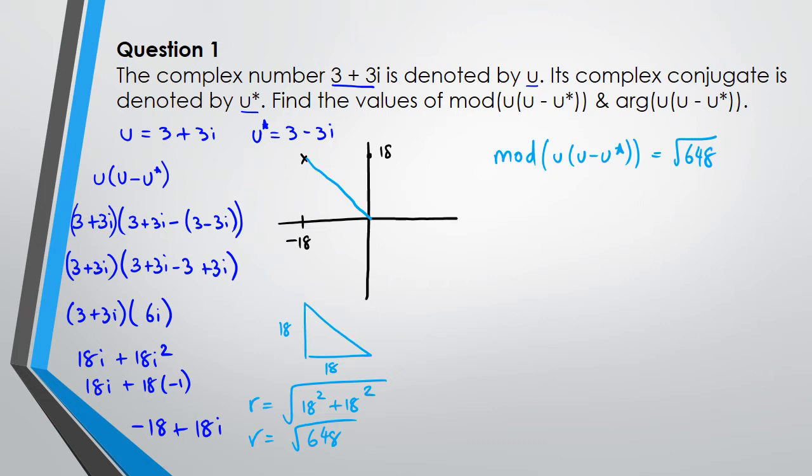Now when I want to work out the argument, the argument starts from the east direction and it goes anti-clockwise, so I'm looking for this angle here. Now what I do know is I know that because this is 18 and this is 18, it's an isosceles triangle, so this is going to be 45 degrees, which means the purple line purple angle is 180 minus 45, that's 135 degrees. So that means we can write argument of u minus u minus u star is going to be 135 degrees.